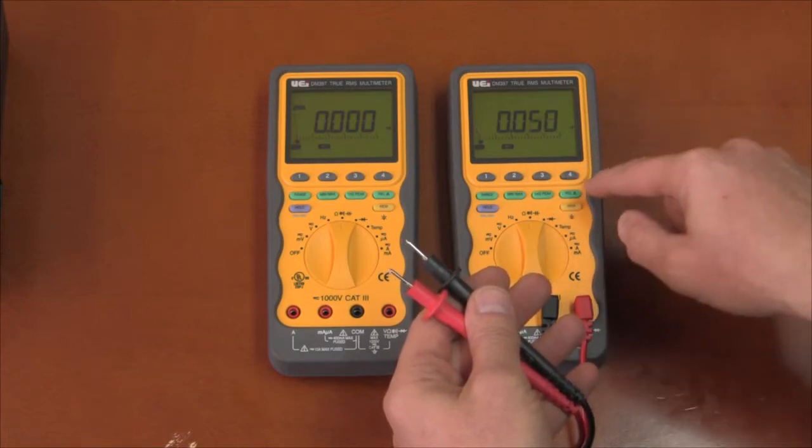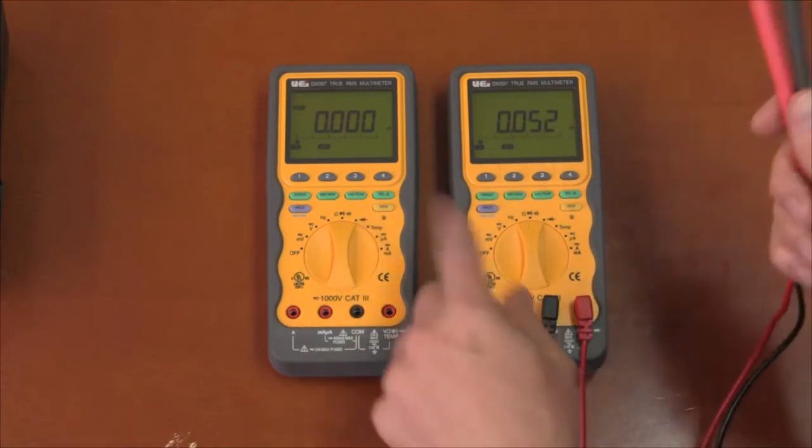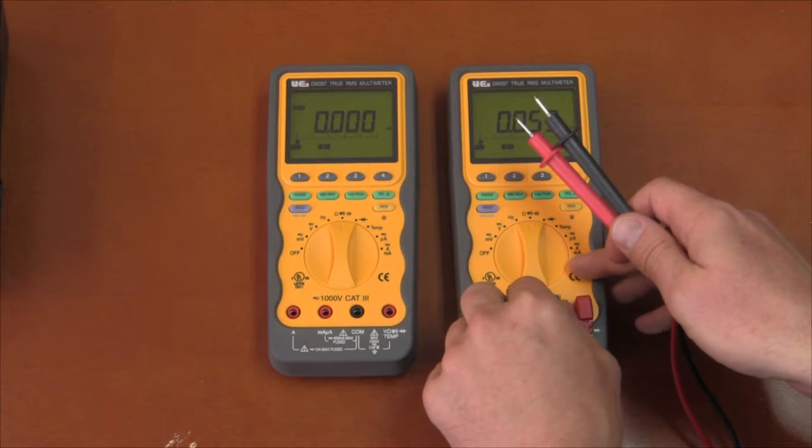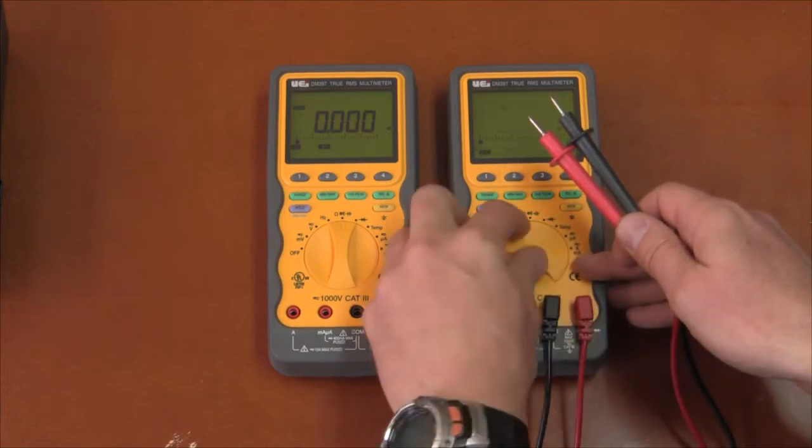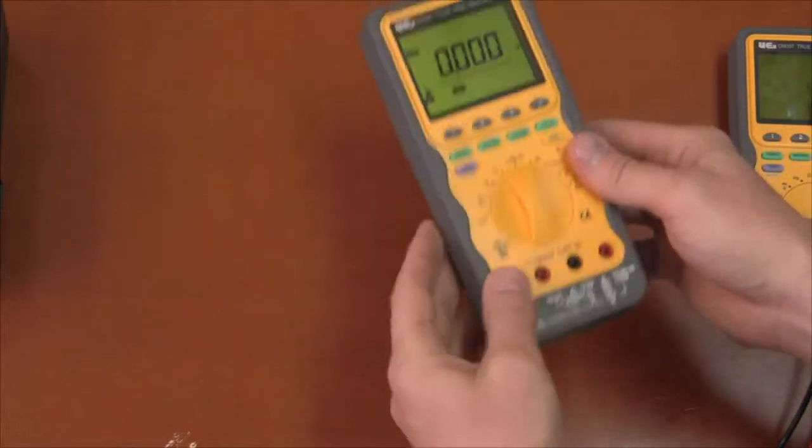So yes, this one is not working correctly on the capacitance. This is the first meter I received, but that's not the only problem that this one had. So let's see what the other problems are. We'll put this one aside for a moment, and we will see what problems I had with this multimeter.